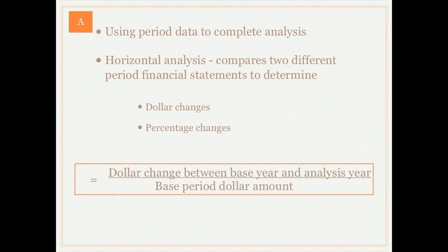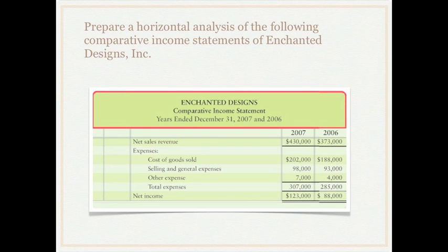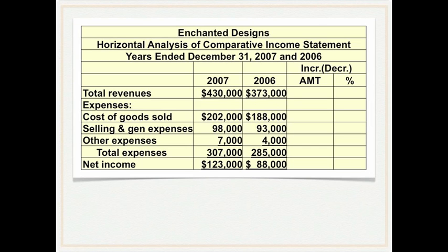To get an idea of what we're talking about, let's look at an example. We're going to use Enchanted Designs and their comparative income statement, using 2006 as our base year and 2007 as the year we're analyzing. Here I've recreated it in a small spreadsheet and we'll start with total revenues.